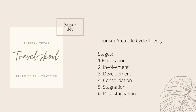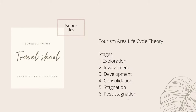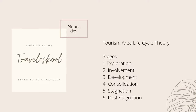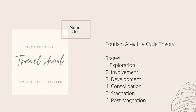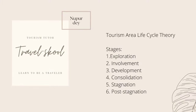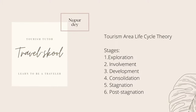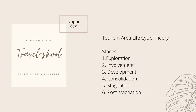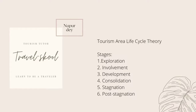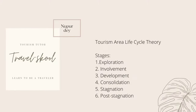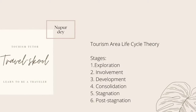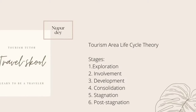When tourism becomes a major source of income for locals and a major component of the local economy, the number of tourists slowly starts decreasing, leading to a consolidation stage. This stage brings the highest point in tourist arrivals, after which the destination reaches its peak and becomes stagnant — the stagnation stage.